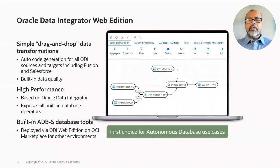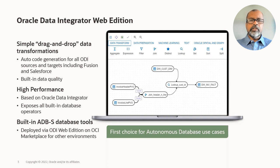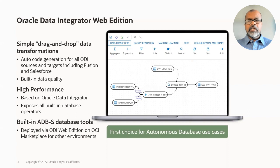Let me introduce you to Oracle Data Integrator Web Edition. This is a simple drag-and-drop data load tool. Even for complex data sources such as Fusion SaaS, you simply drag the source data entity into the design canvas and build a data flow without needing to know the complex details of how data is extracted from the source. It supports all kinds of transformations, including data quality transformations. It is based on Oracle Data Integrator, a mature integration tool used by thousands of customers worldwide. It uses the same ELT — extract, load, and transform — architecture of ODI, leveraging the database server for transformations. It is a high-performance tool for bulk data load and transformations, very well suited for data warehousing. It is also built into Oracle Autonomous Database Tools at no extra cost.